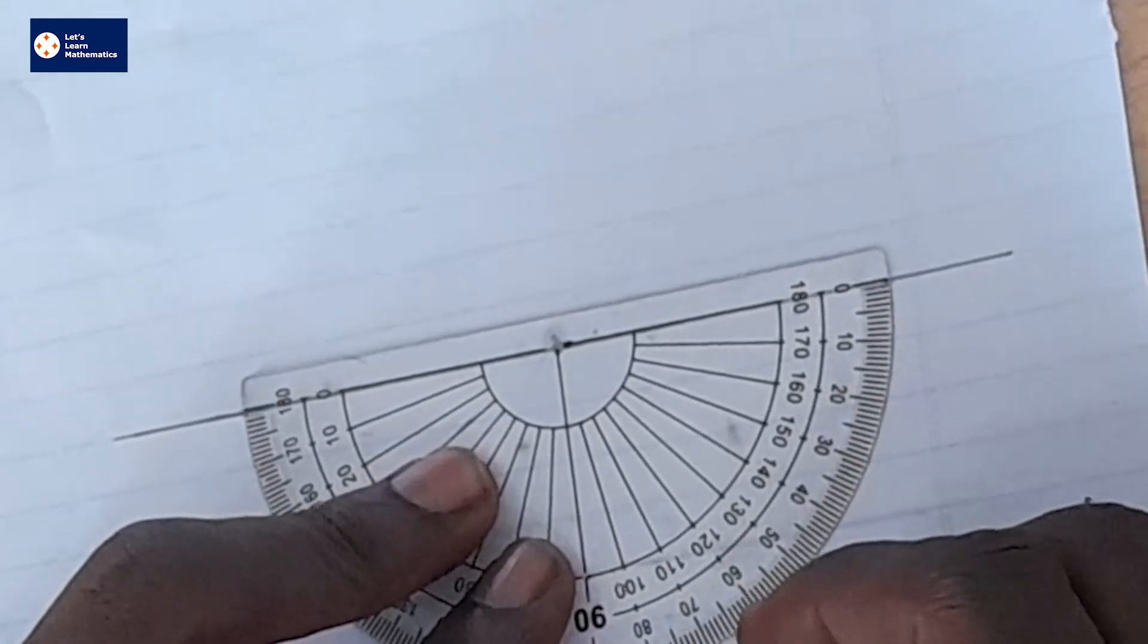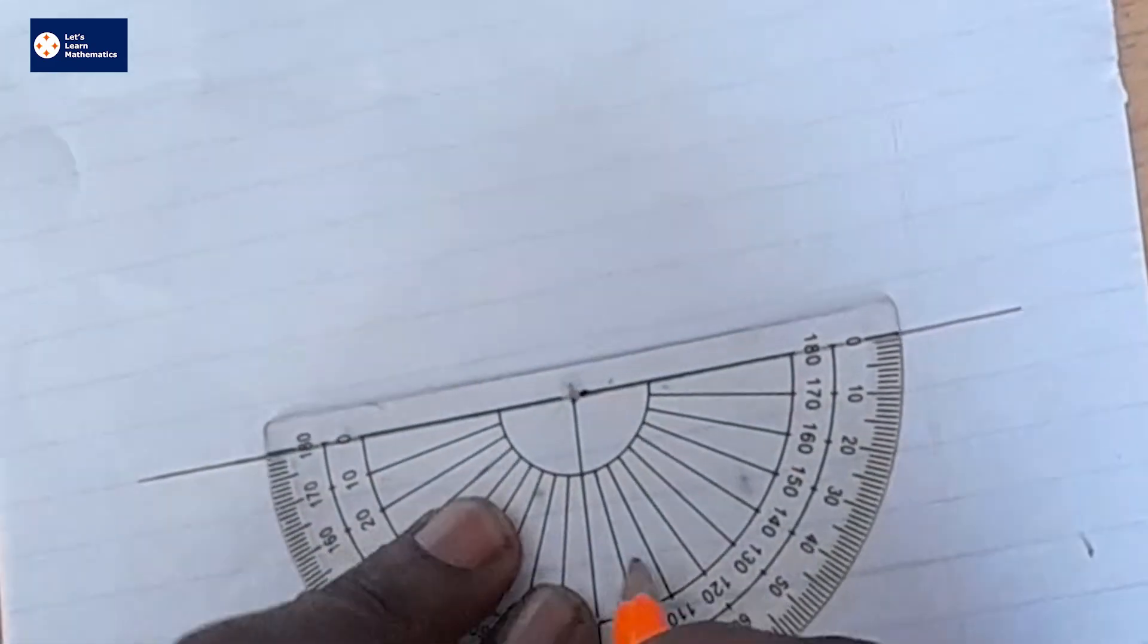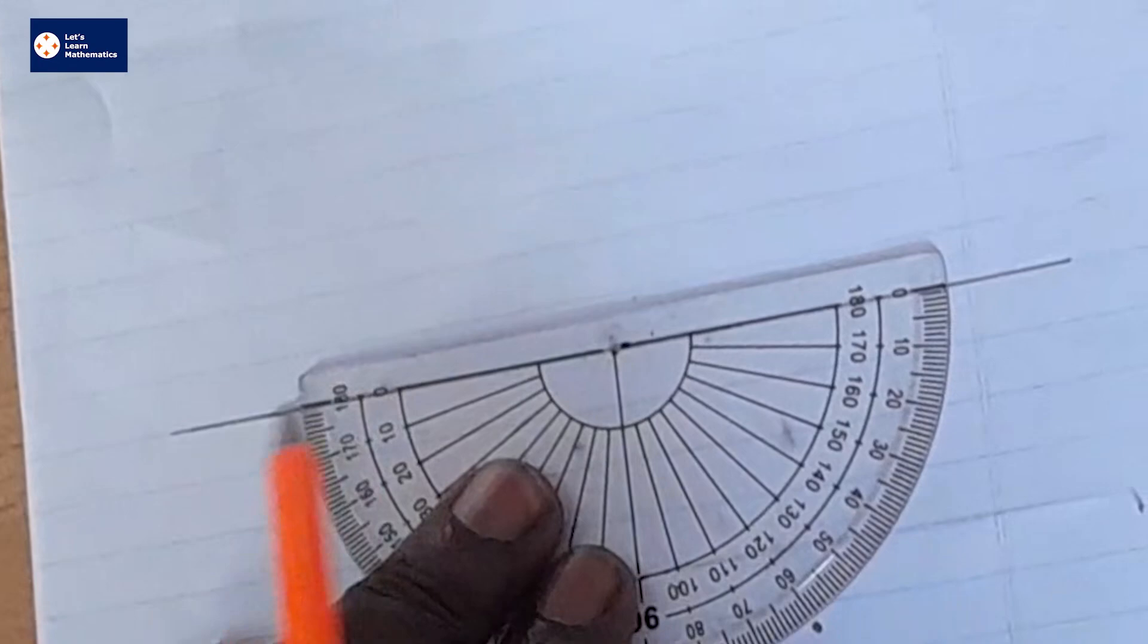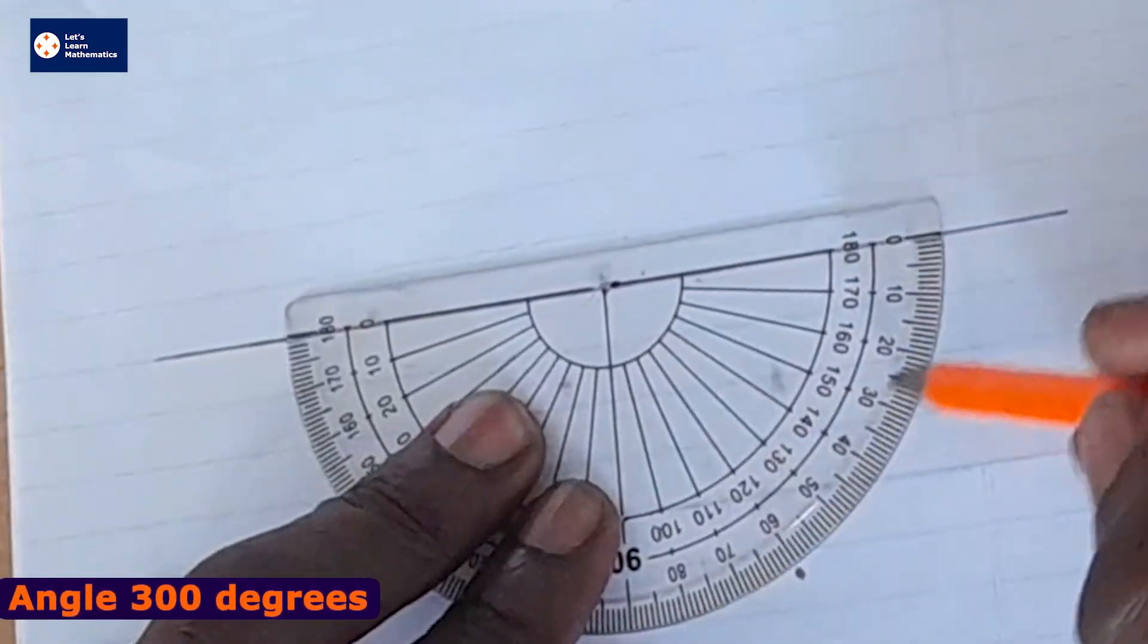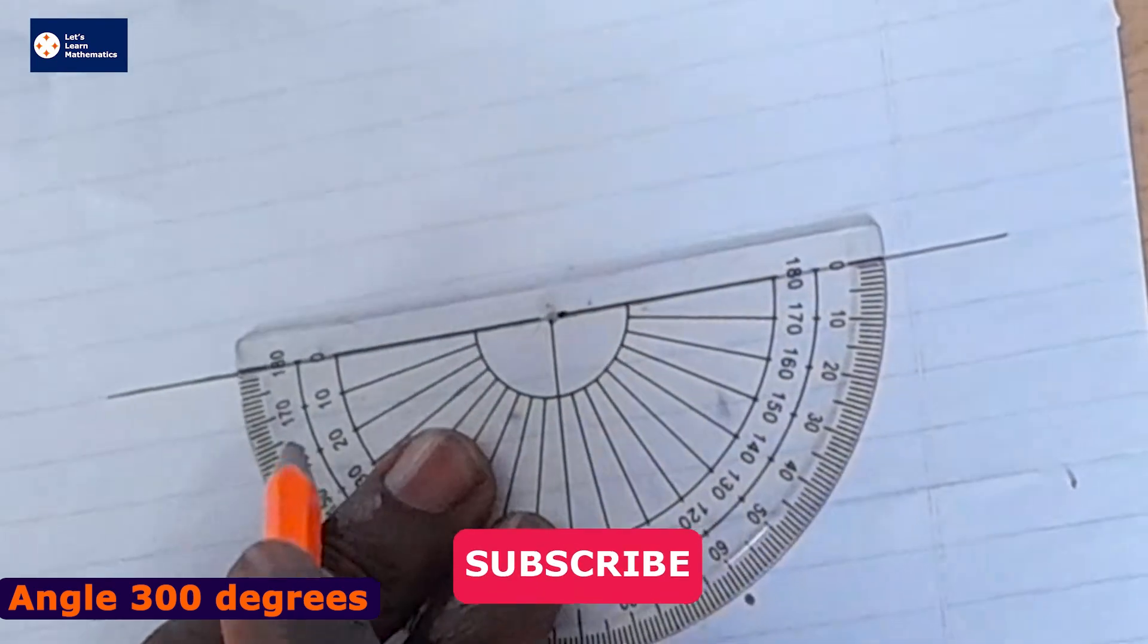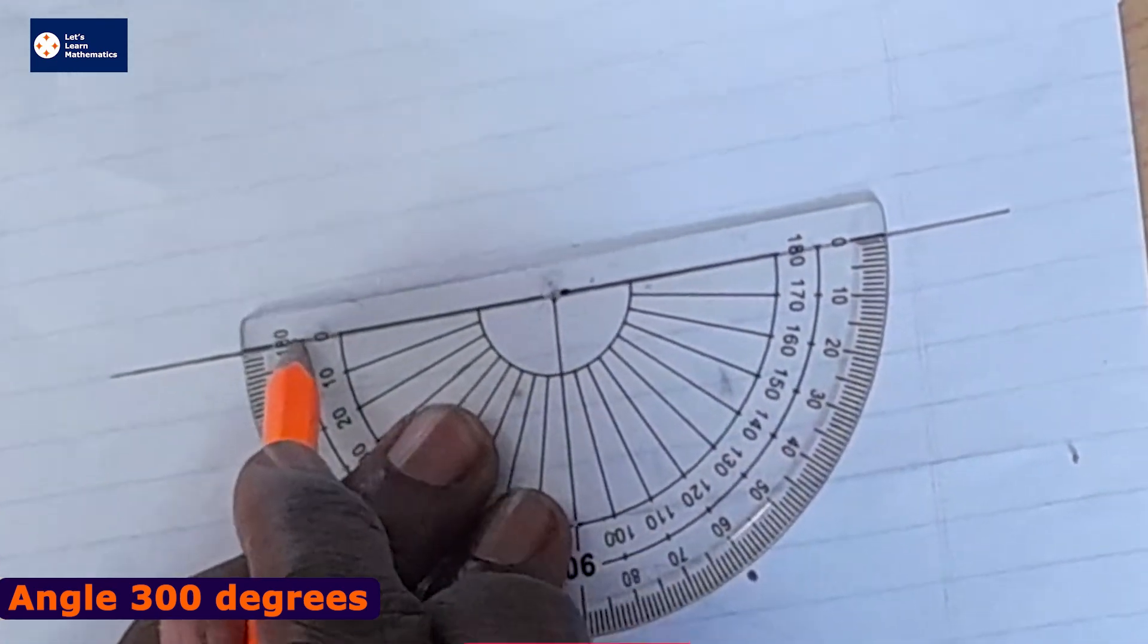If I draw 60 degrees here, it means the angle that would be on the left-hand side would be 120. If here is 60, it means the angle down here on the left-hand side would be 120.